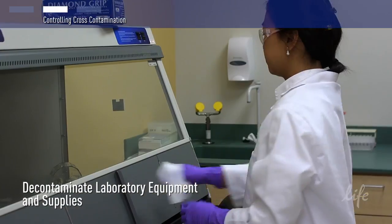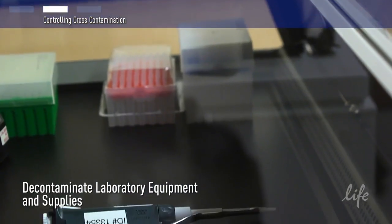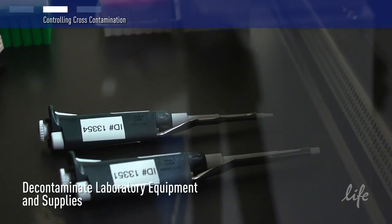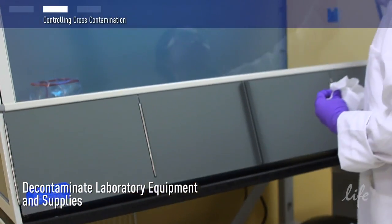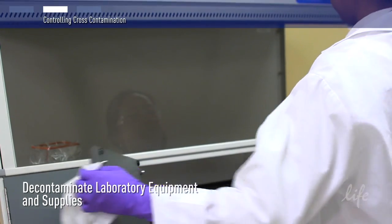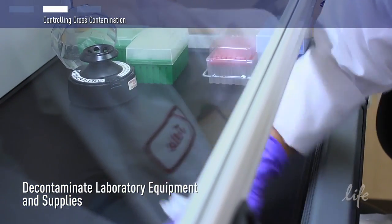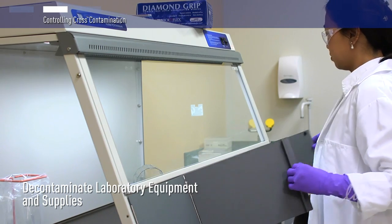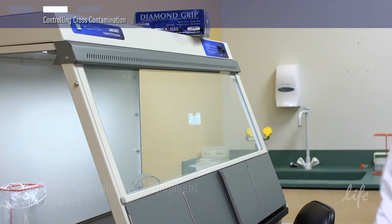Decontaminate all surfaces by wiping down PCR equipment, workstations, and pipettes with cleaning agents such as DNA Zap solution or a 2% bleach solution. Generously spray and wipe up the cleaning agent. This should be done before and after each PCR experiment.